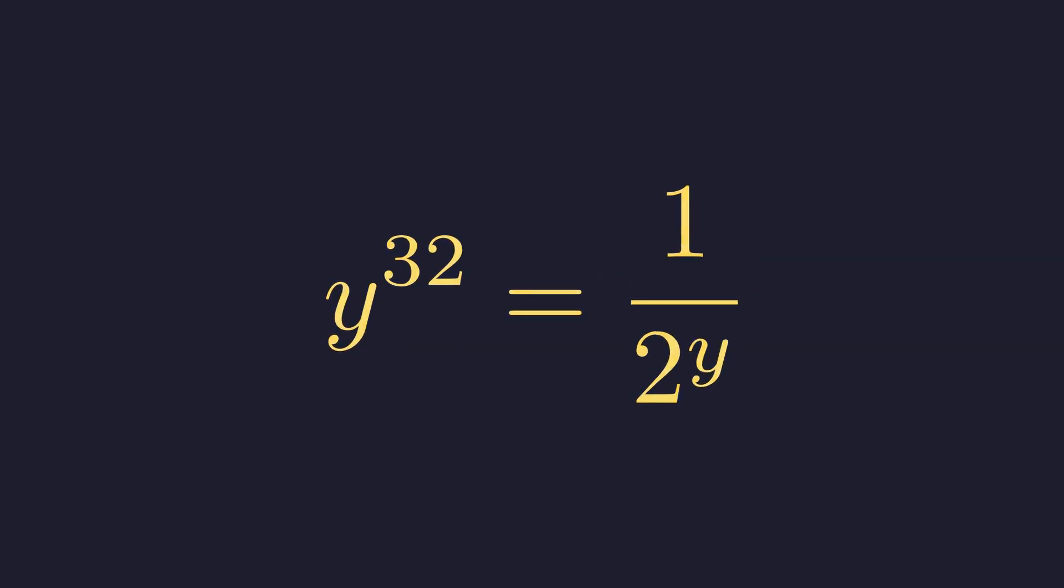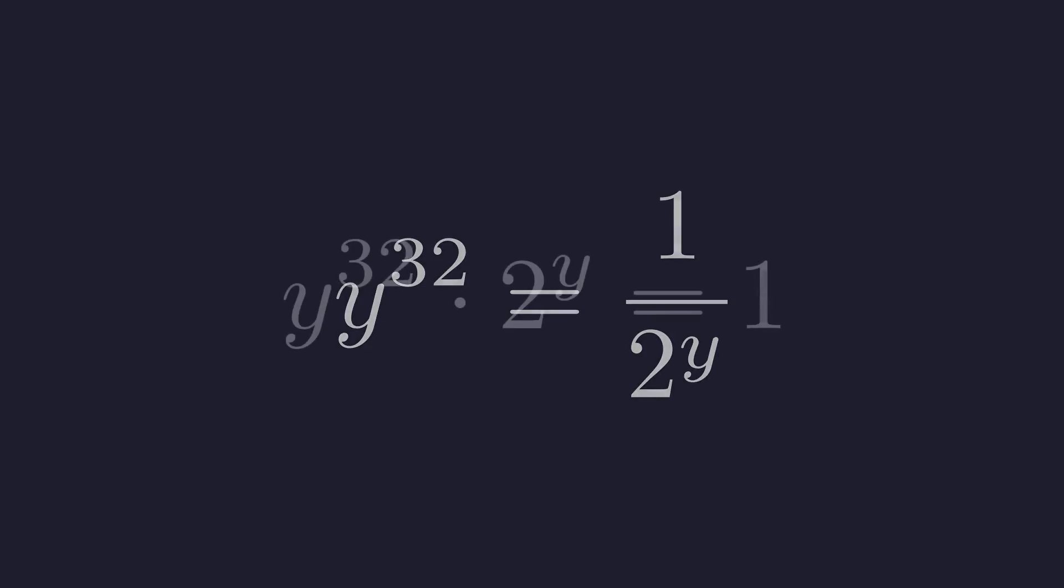Now, let's multiply both sides by 2 to the power of y to clear the fraction. And we arrive at this equation: y to the 32nd times 2 to the y equals 1.